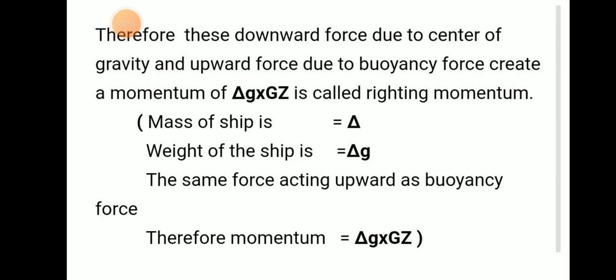Therefore, the downward force due to center of gravity and upward force due to buoyancy creates a moment. That is Δ × g × GZ. This is called righting moment to make it stabilize. Here Δ represents mass of ship and Δg represents weight of ship, that includes gravity.